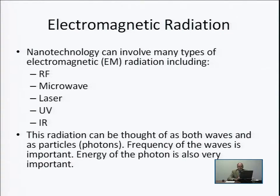There are many types of electromagnetic radiation used in a nanofabrication facility: radio frequency radiation found in plasmas along with visible light; microwave frequencies found especially in plasma-generating tools; radiation from lasers; UV light found in photolithography tools; and infrared light found in many types of tools. These are examples of the kinds of electromagnetic radiation that can be encountered.